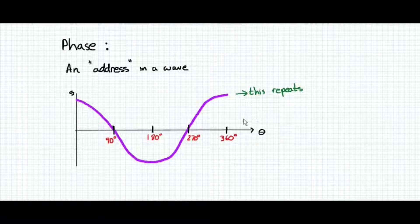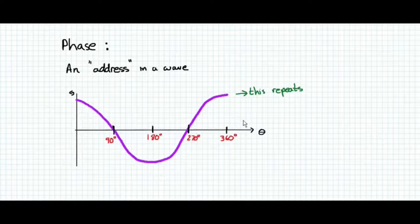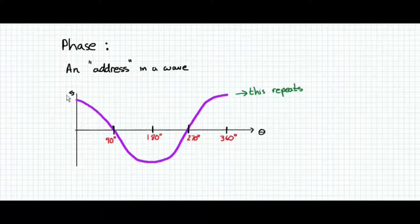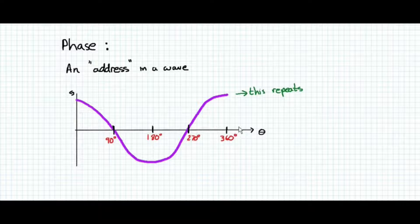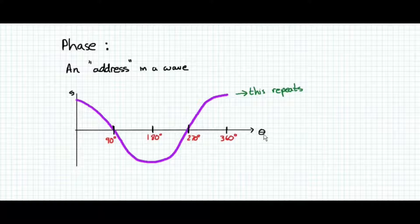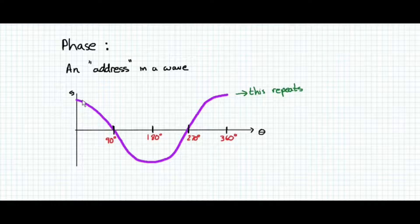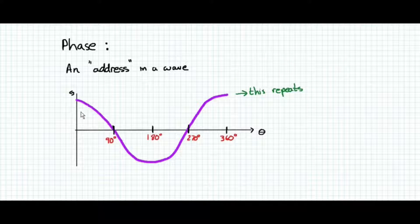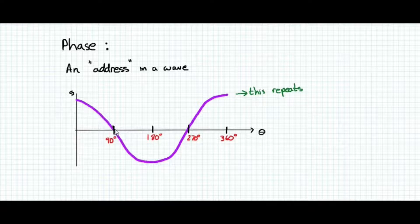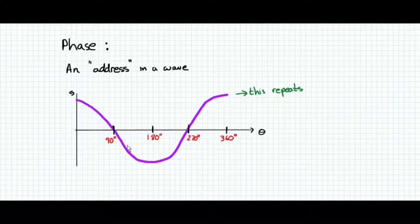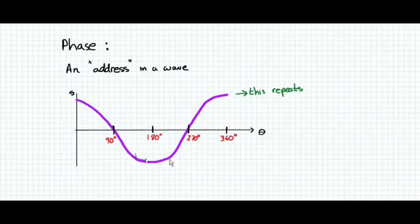Phase is a way of addressing one's position in a wave. If we have a graph of displacement versus angle rather than distance x or time t, then we can address our position within that wave as an angle. This wave is a cosine, and we can see that we have a position labelled here 90 degrees, and a position down here labelled 180 degrees, and so on.